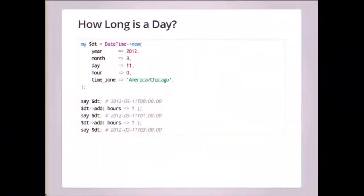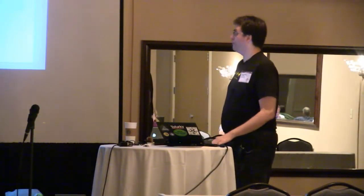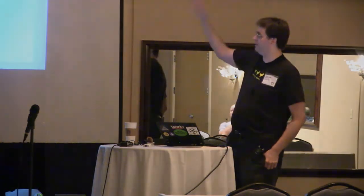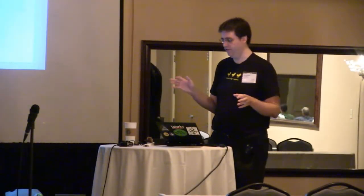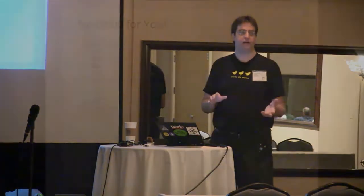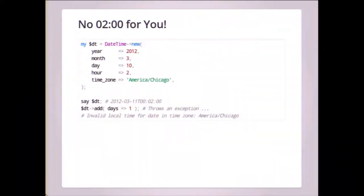Here's another fun problem. It's March 11th at midnight in 2012. We add an hour — it's 1am. We add another hour — it's 3am. On this particular DST transition, we jump forward an hour, so there is no local 2:00 to 2:59:59 — it just doesn't exist. If we create the day before, March 10th at 2am, that time exists. Then we add a day — it's going to throw an exception because there is no 2am on March 11th. If you want to work around this, you can just do everything in UTC. If you try to create a DateTime of March 11th 2am with America/Chicago as the time zone, you'll get an exception: 'invalid local time for date and time zone.'